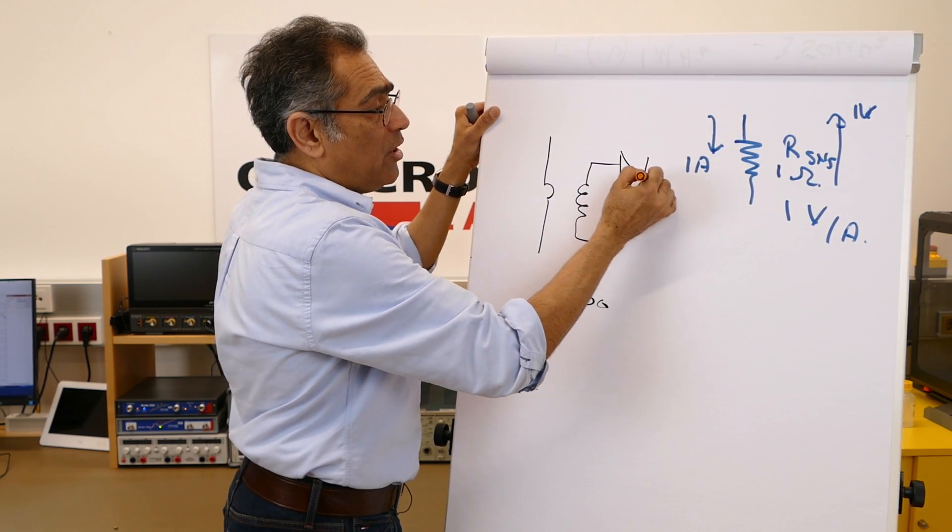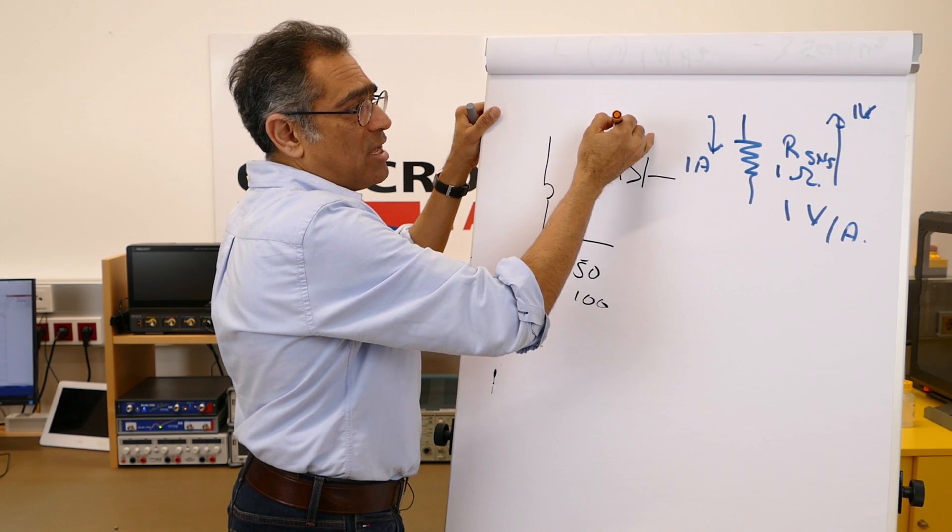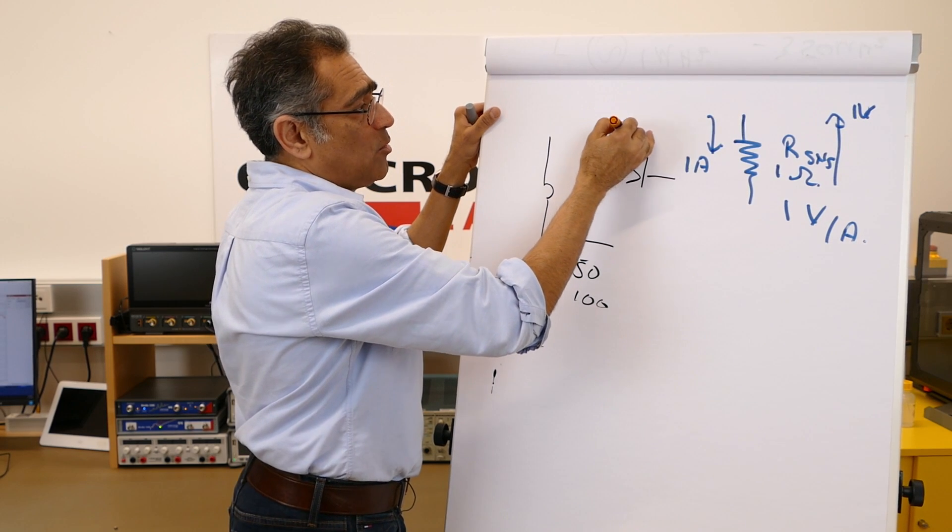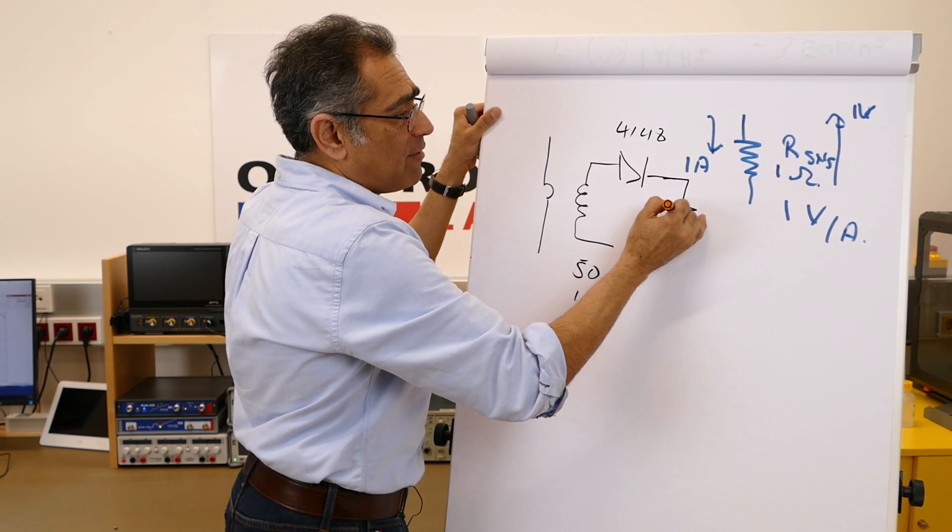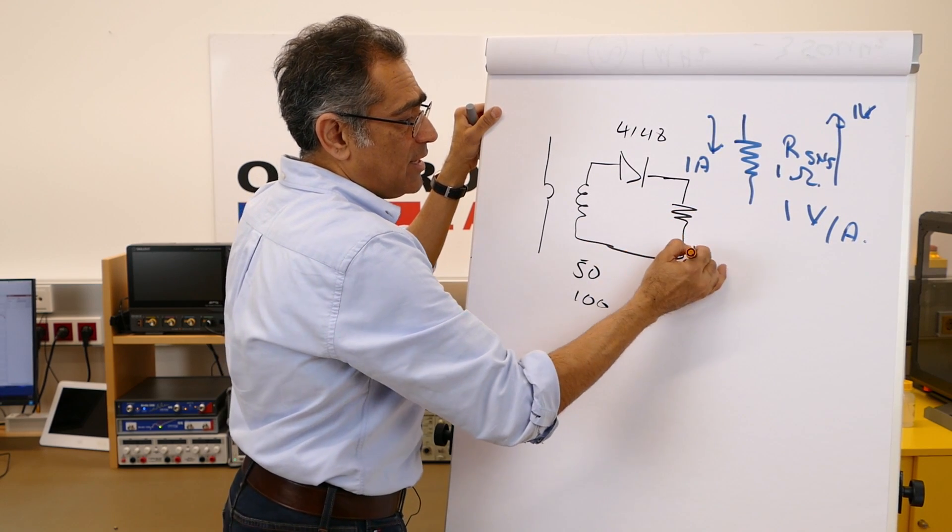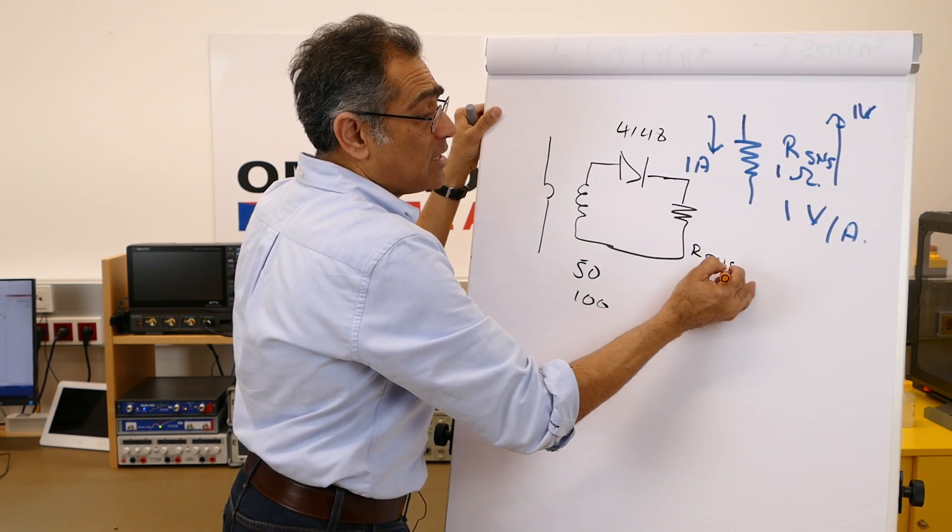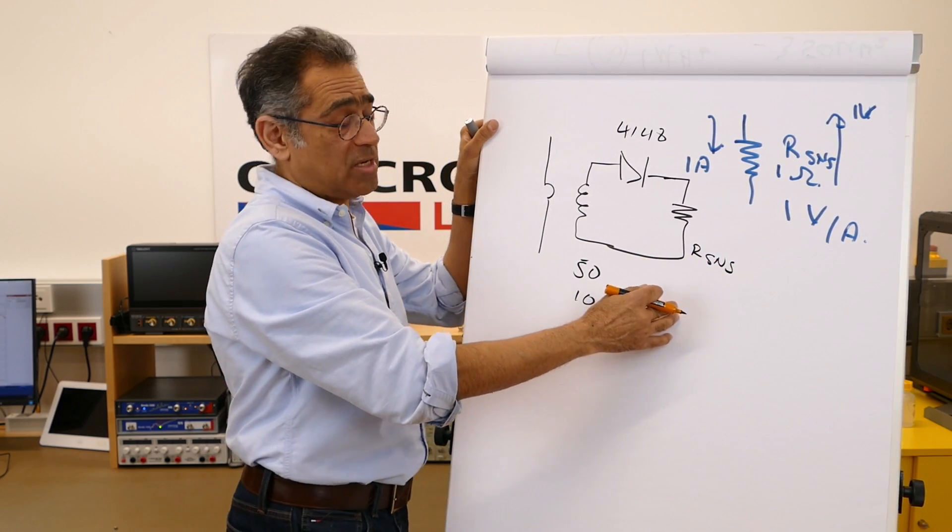You put a diode here. That is usually a fast, small fast diode, maybe a 4148. And then you have your sense resistor here, R sense, and sometimes it's called a burden resistor, R burden.